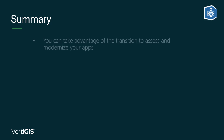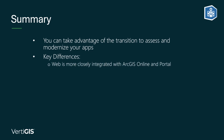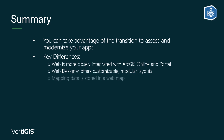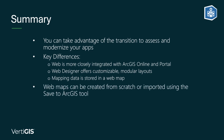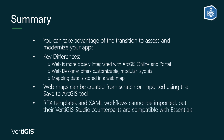To summarize, transitioning from Essentials to Vertigo Studio Web offers an opportunity to assess and modernize your apps. Web is more closely integrated with ArcGIS Online and Portal for ArcGIS Enterprise, it has customizable modular layouts, and its mapping data is stored in a web map instead of a Site.xml file. We looked at how to make a web map in Esri's Map Viewer, as well as how to export a web map from a GeoCortex Viewer. Finally, we learned that RPX templates and XAML workflows cannot be imported into Vertigo Studio. However, Vertigo Studio workflow, printing, and reporting are compatible with both platforms, meaning you can simplify the transition process.